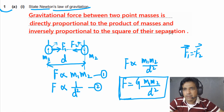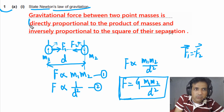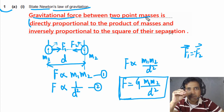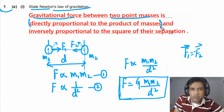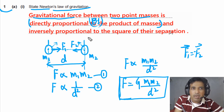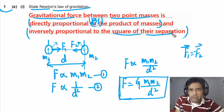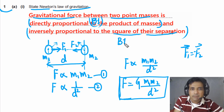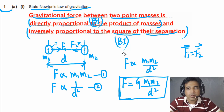For marking: the first mark is awarded if you state the gravitational force acts between two point masses and is directly proportional to the product of the masses. The second mark is for stating it is inversely proportional to the square of the separation between their centers.